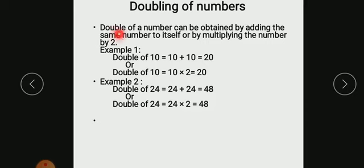Double of a number can be obtained by adding the same number. Children, remember this. Double of a number means you can add the same number. If you want to make it double, you have to add the same number. 10 plus 10, it becomes 20.